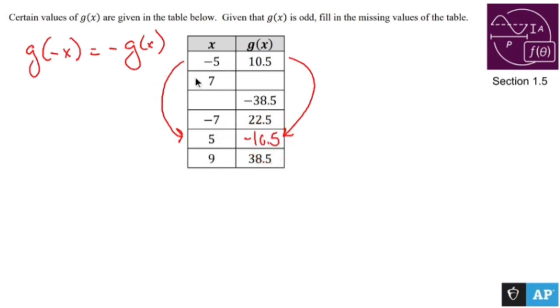So g of negative 7 is going to be negative 22.5. And u are going to be the opposite of u, which is negative 9.